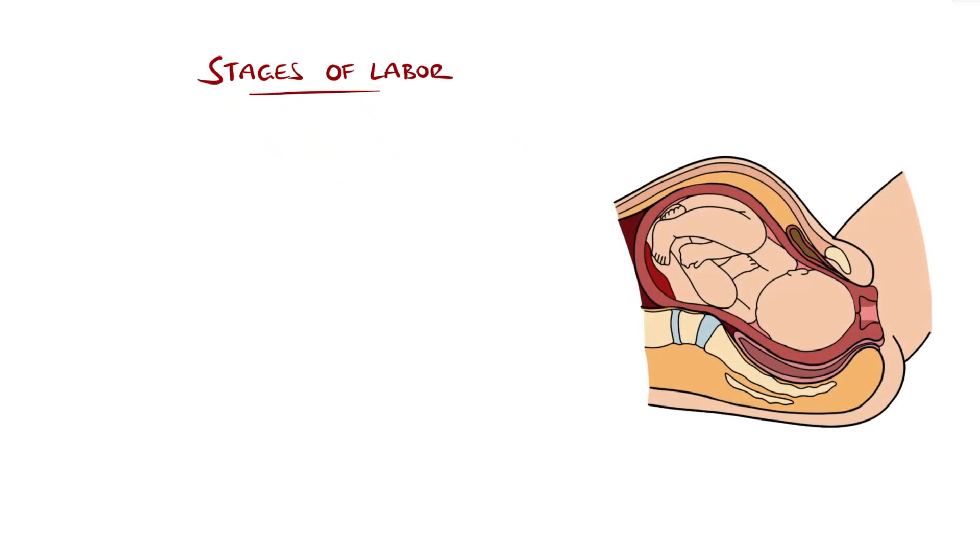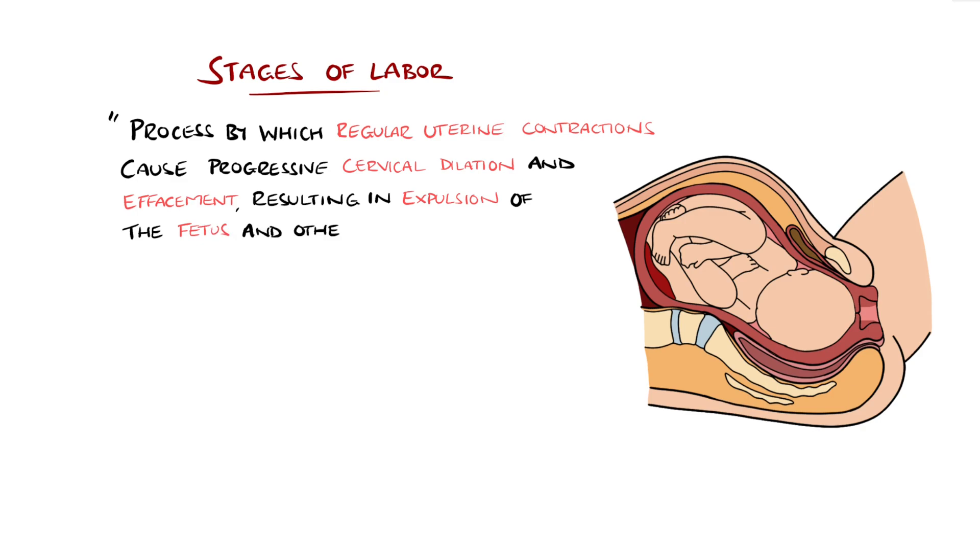Labor is the process by which babies are physiologically delivered, more formally defined as the process by which regular uterine contractions cause progressive cervical dilation and effacement, resulting in the expulsion of the fetus and other products of conception. It is divided into three main stages.